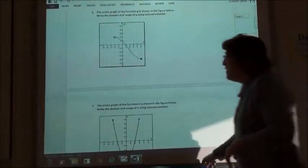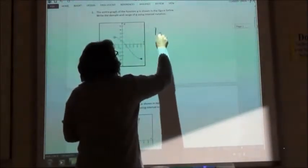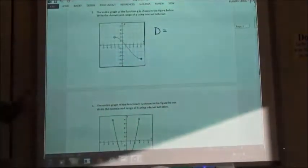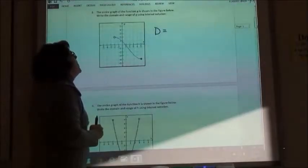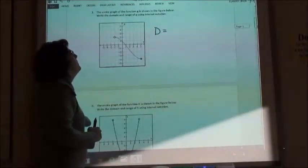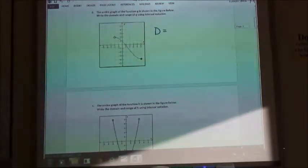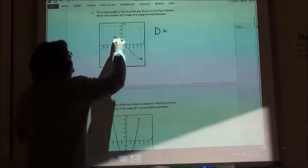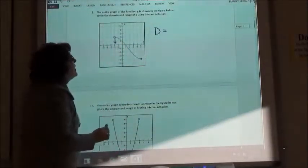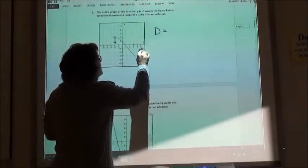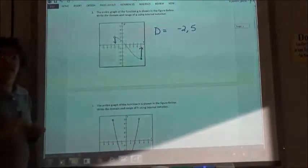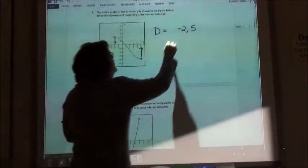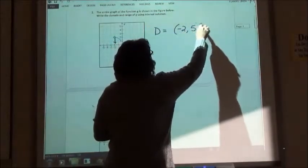So number 2 here, if I look at that one, if I'm going to do my domain, my domain I'm going from left to right. My farthest left x value is at negative 2. The farthest right point is at 5. So I went from negative 2 to 5. The negative 2 is going to have parenthesis and the 5 would have bracket.